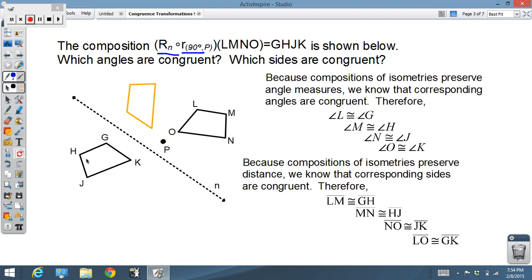Also, because compositions of isometries preserve distance, we know that the sides among corresponding sides, corresponding points, must also remain congruent. So therefore LM is congruent to GH, etc. So again, we're looking at the corresponding points and angles and recognizing that the sides and angles must be the same between the figures after the composition of isometries.